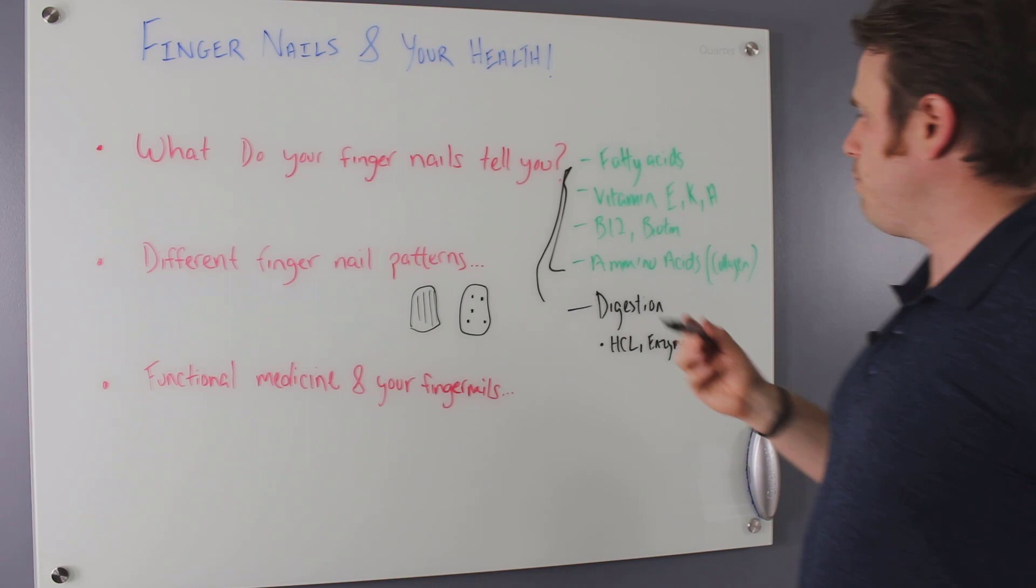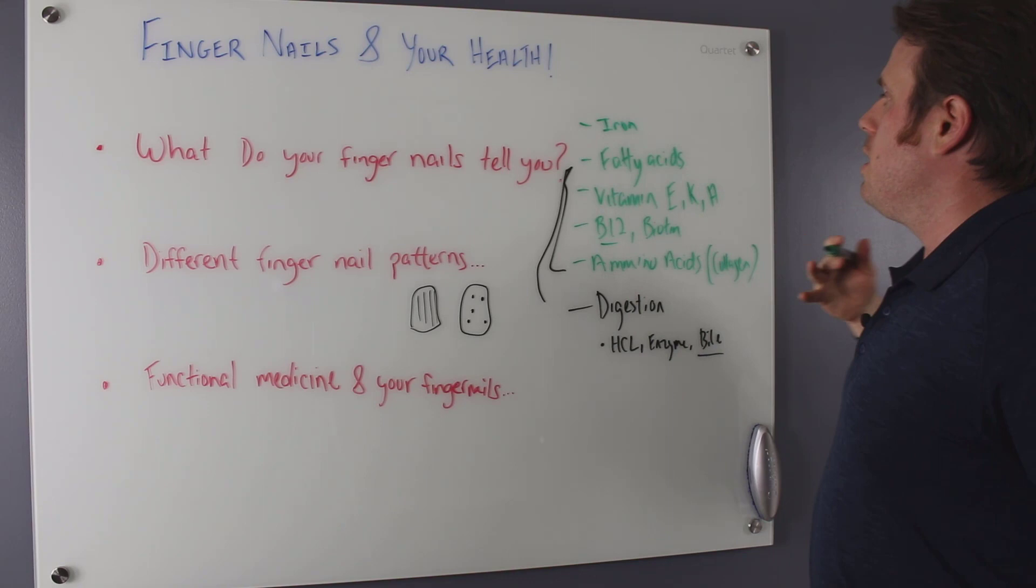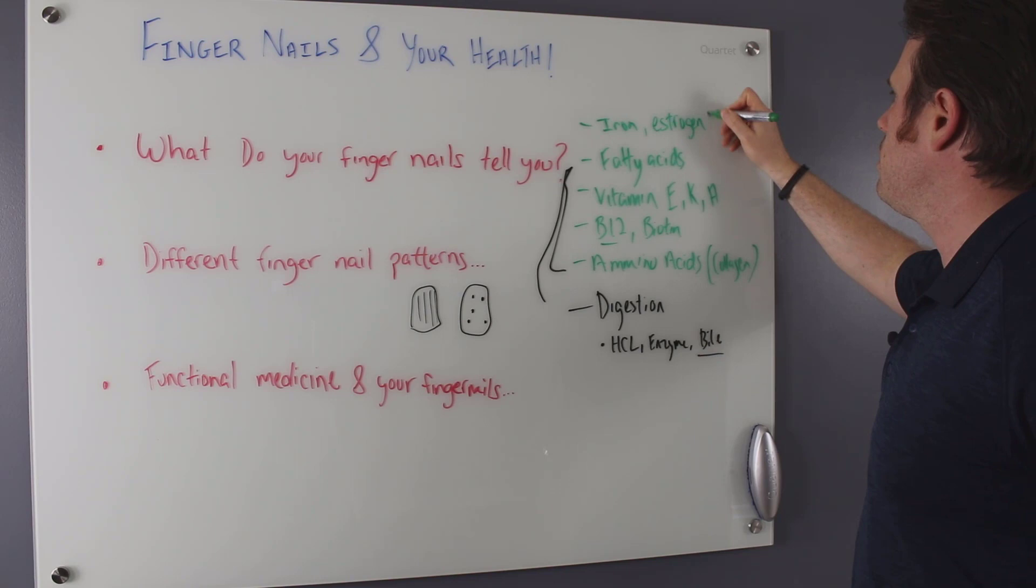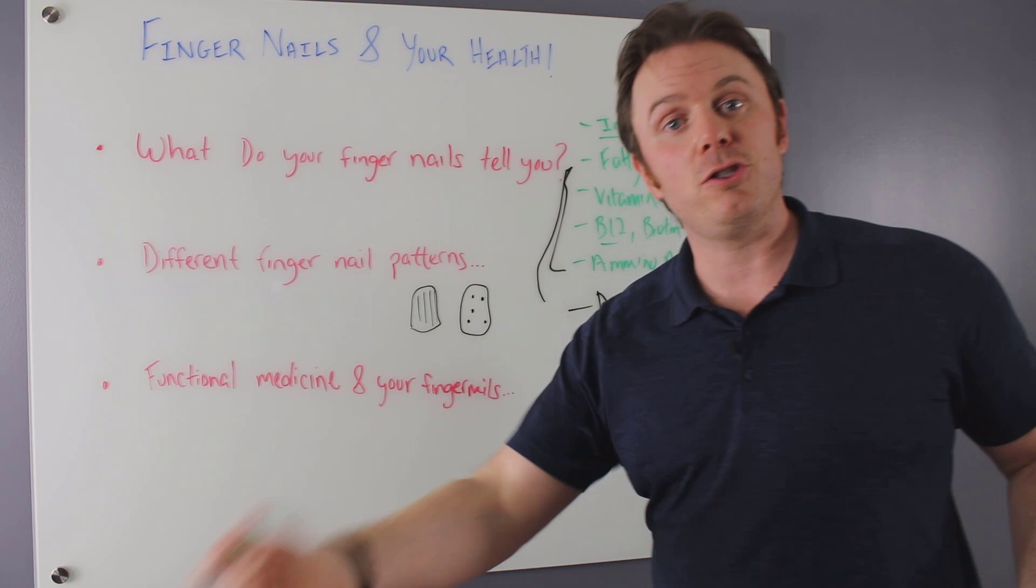Also I should say one other nutrient here that's important that gets missed a lot is going to be iron. And iron is important because vegan vegetarian diets are low in iron. They're also low in B12 and then also this could be from estrogen dominance. So females who have too much menstruation, too much bleeding, they're going to be losing a lot of iron in their menstruation every month. So a lot of times hormonal issues can have an effect.